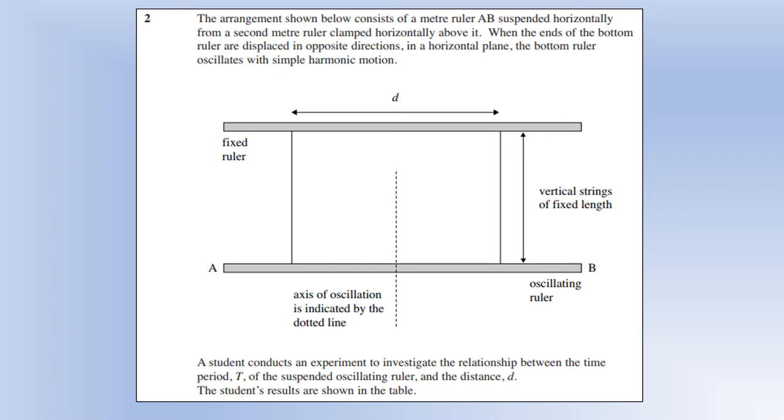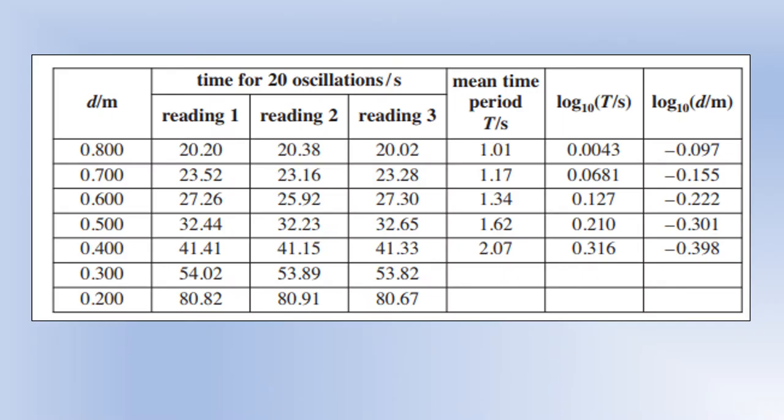So the scenario we've got: we've got a meter ruler suspended horizontally from a second meter ruler which is clamped and the bottom ruler is displaced and then it's going to oscillate in simple harmonic motion. So it's kind of like a pendulum but it's slightly different and they investigate the relationship between the time period and the distance between the strings. And what they've got is we've collected data and there are some blanks in there we're going to be filling in later.